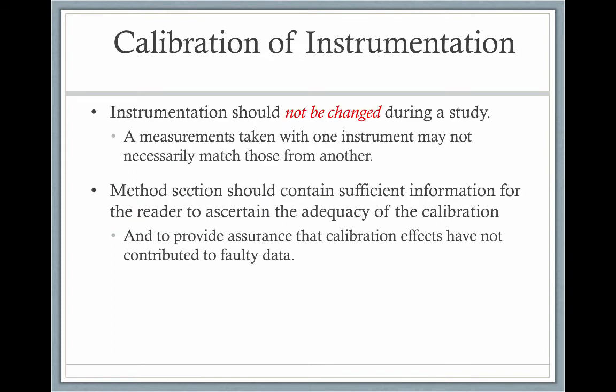Instrumentation should not be changed during the study, as a measurement taken with one instrument may not necessarily match those from another. You can't switch out your instruments halfway through your study. The methods section should contain sufficient information for the reader to ascertain the adequacy of the calibration and to provide assurance that calibration effects have not contributed to faulty data.